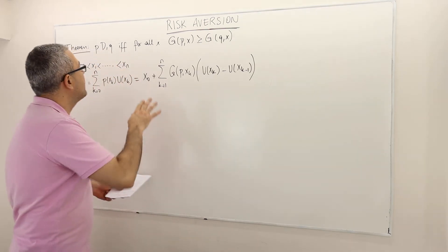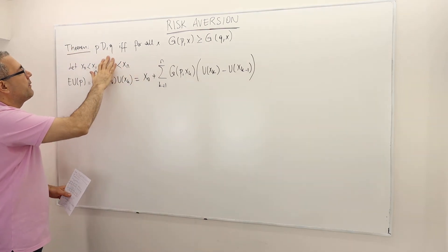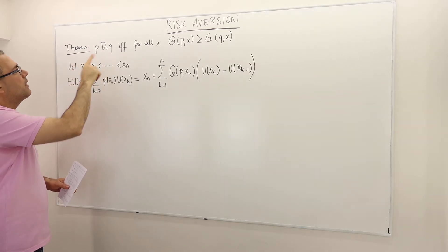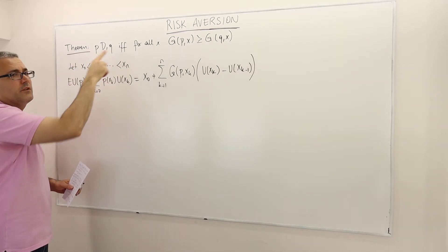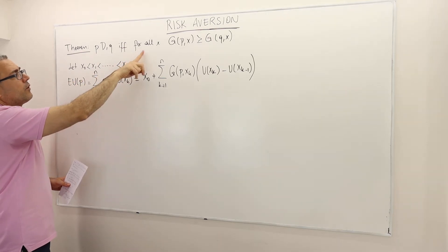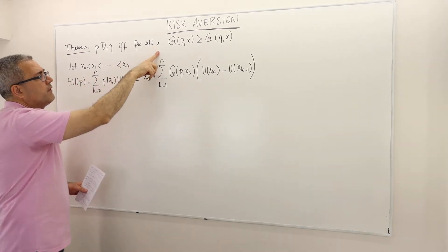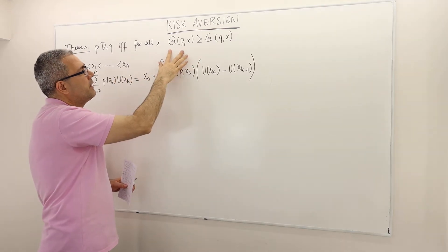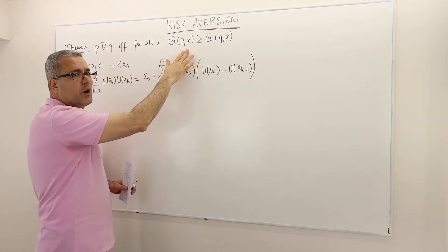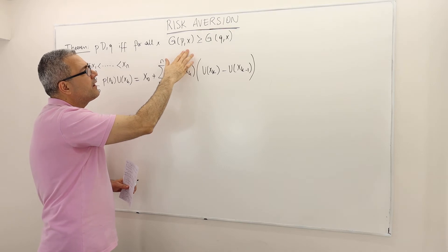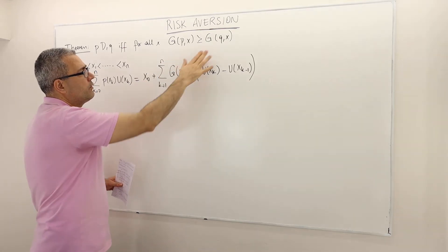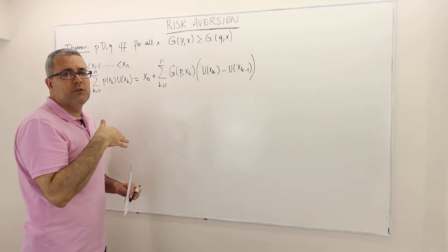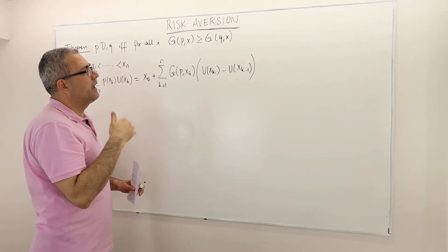Hi guys. So we are now trying to prove this theorem. It says some lottery P is first-order stochastically dominating Q if and only if, for all prize levels X, the G of P of X — the probability that lottery P gives you a prize at least as high as X — should be greater than or equal to the probability that lottery Q gives you a prize at least as high as X.